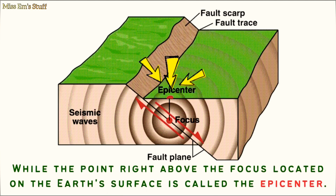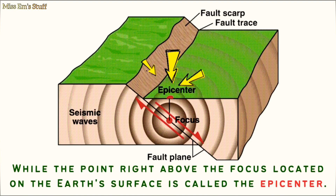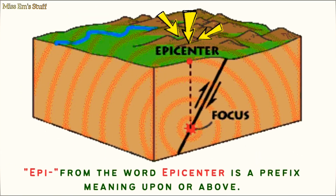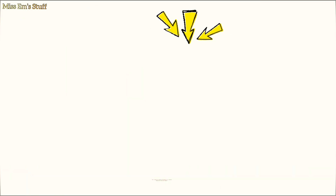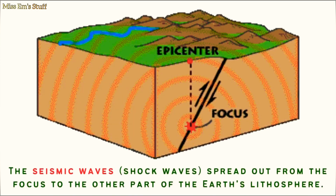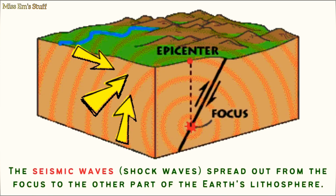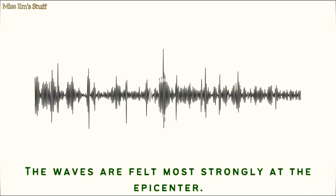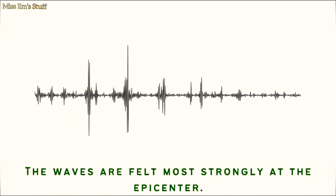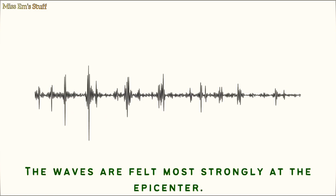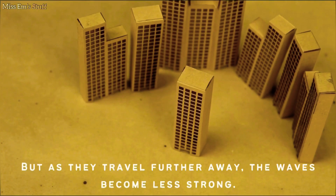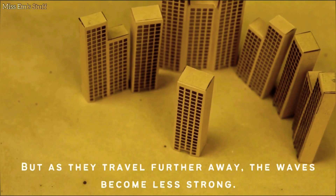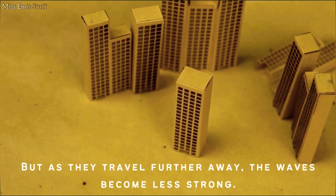While the point right above the focus, located on the earth's surface, is called the epicenter. The prefix 'epi' from the word epicenter means upon or above. The seismic waves, or shock waves, spread out from the focus to other parts of the earth's lithosphere. The waves are felt most strongly at the epicenter, but as they travel further away, the waves become less strong.